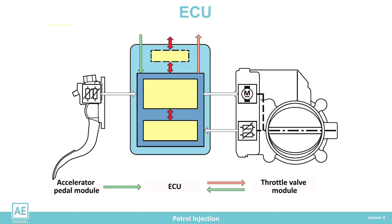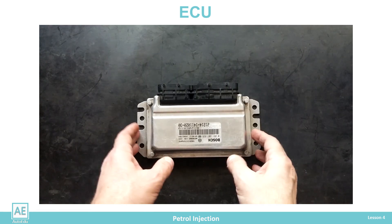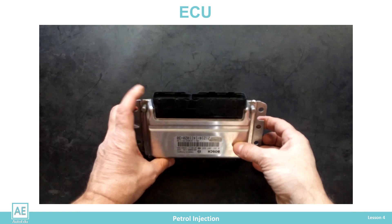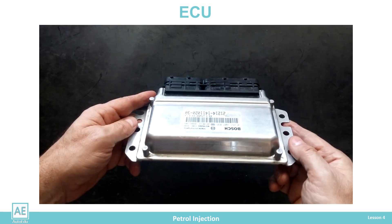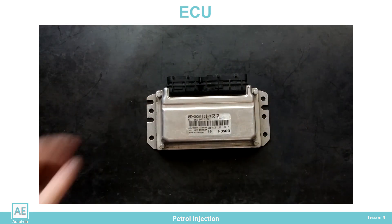The electronic engine control unit occupies a central place in the injection system. Its task is to monitor all the necessary parameters and functions and, based on internal and external needs, manage the engine's operation to obtain the optimal torque. The elements used by the control unit to regulate engine torque are charge pressure, cylinder damping, injection timing, and ignition angle.